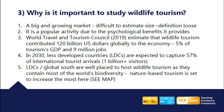In 2030, less developed countries where there are high levels of poverty are expected to capture 57% of international tourist arrivals — that's a billion plus visitors. Tourism can be used as a tool to help alleviate poverty. Less developed countries around the equator and the global south are well placed to host wildlife tourism as they contain most of the world's biodiversity on land. And nature tourism is set to increase the most in these areas.